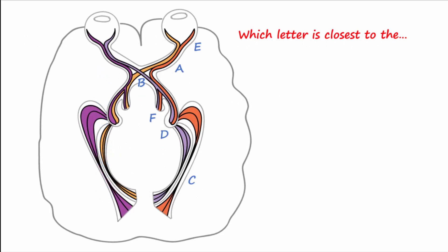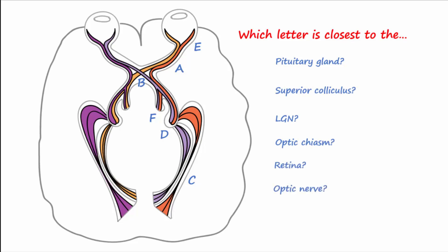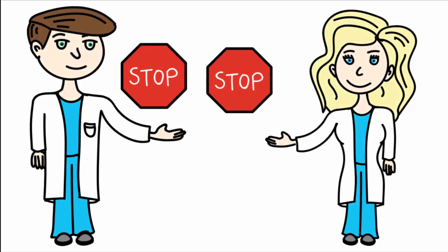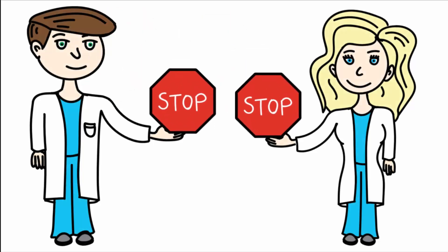Using this figure, please answer the following questions: which letter is closest to the pituitary gland? The terms to order include: superior colliculus, LGN, optic chiasm, retina, optic nerve, and optic radiations. Pause the video and determine your answers. If you answered the following, you are correct. Thanks for watching.